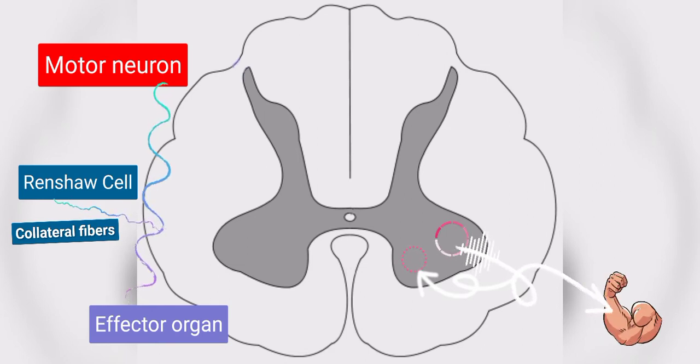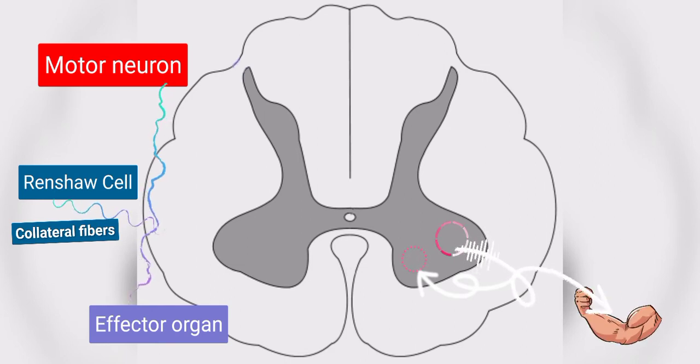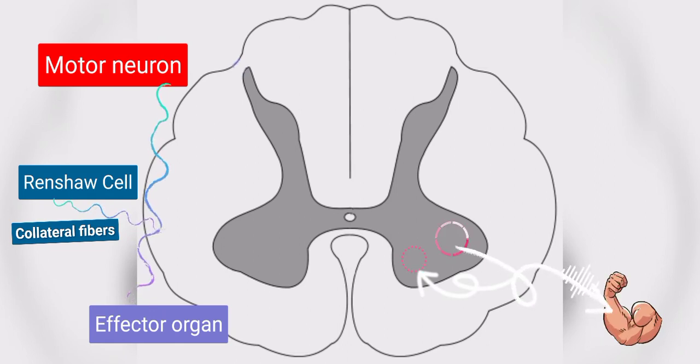When motor neurons send impulses to effector organs through their fibers, some of the impulses also reach Renshaw cells through collateral fibers.